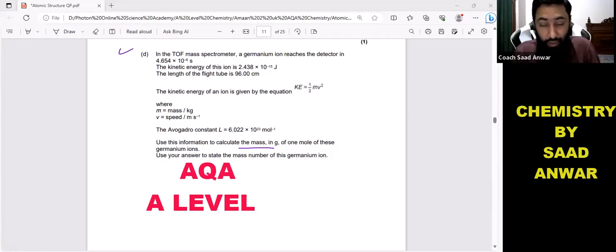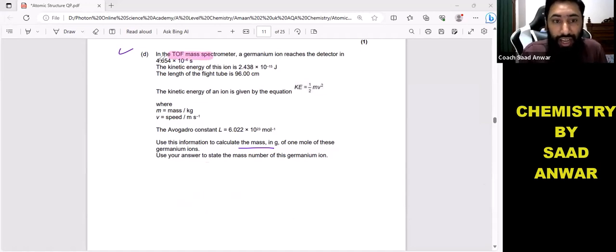Let me read a few things from the question, then I'll try to make this question quite easy for you. Time of flight mass spectrometer, germanium ion reaches the detector with this time, this is the kinetic energy value. The length of the flight tube, 96 centimeters, is given. The formula is given, Avogadro's constant is given. Everything is given.